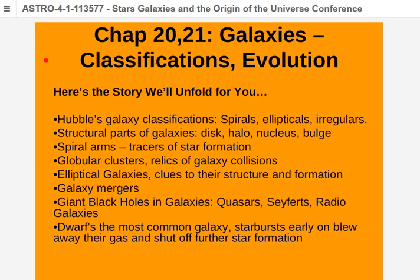Galaxies form first by making the central bulge and halo. Only later does the disk form from gas falling in from further out. That gas has angular momentum from the gravity of nearby neighbors, so it can't fall straight in — it orbits and forms the disk, out of which stars later form. The disk and its stars formed later; the central bulge and halo formed right away. This is confirmed by stellar populations: Population I stars are in the disk, Population II stars are in the halo.